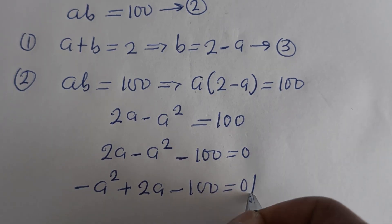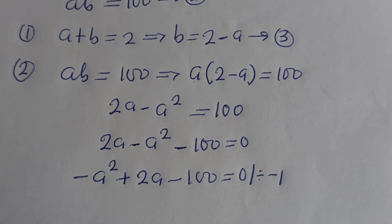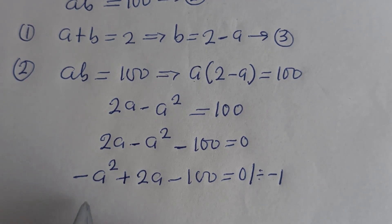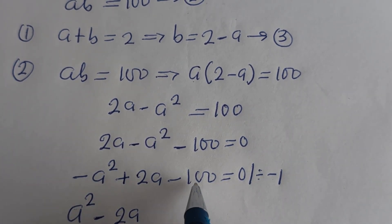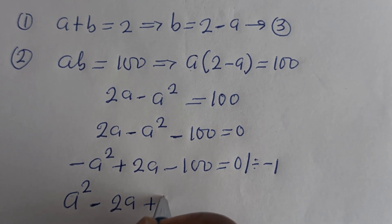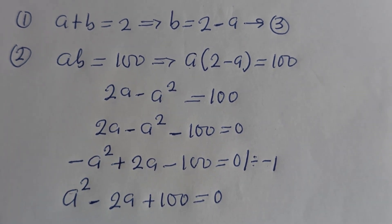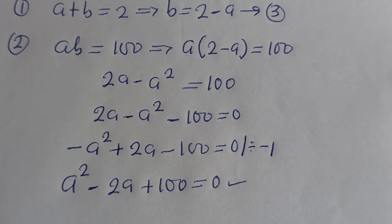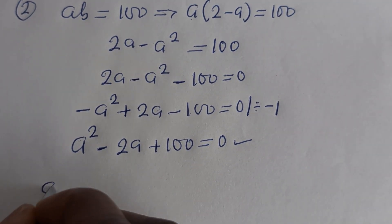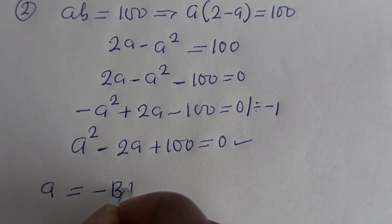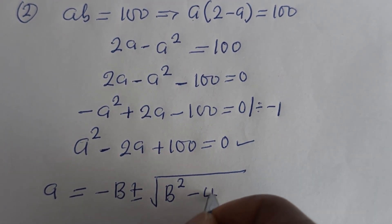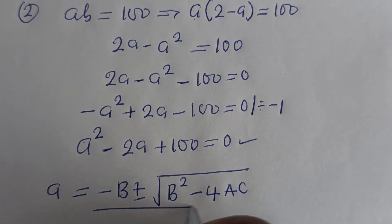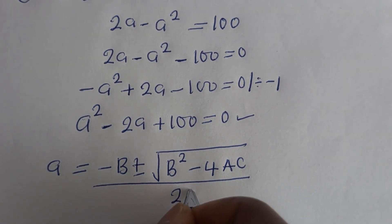So minus A squared plus 2A minus 100 is equal to 0. Let us divide all through by minus 2: minus A squared divided by minus 2 gives A squared, plus 2A divided by minus 2 gives minus A, minus 100 divided by minus 2 gives plus 50 — wait, this gives plus 100 is equal to 0. This is a quadratic equation. The quadratic general formula is: A equals minus B plus or minus square root of B squared minus 4AC, over 2A.